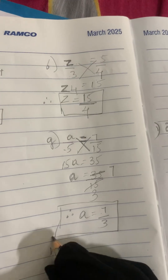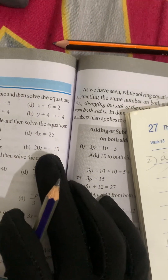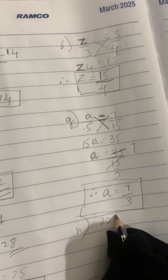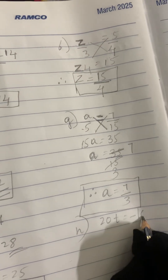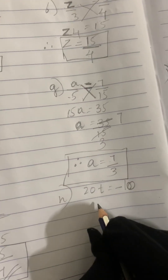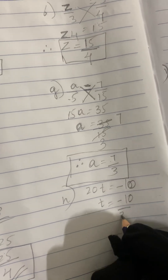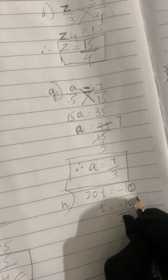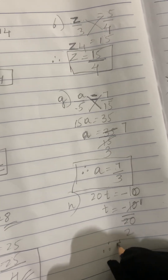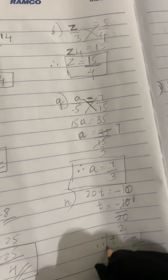Now let's solve the H sum, which is the last of this section: 20T equals minus 10. Similar to before — take out T: T equals minus 10 divided by 20. Cancelling: 10 ones are 10, 10 twos are 20. Therefore T equals minus 1 divided by 2 is our final answer.